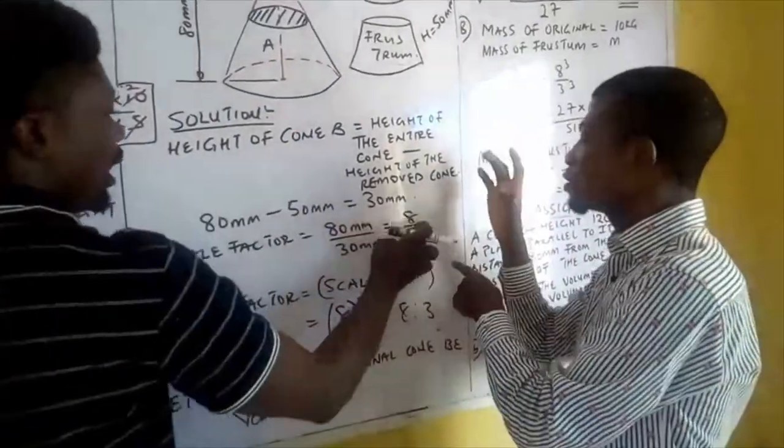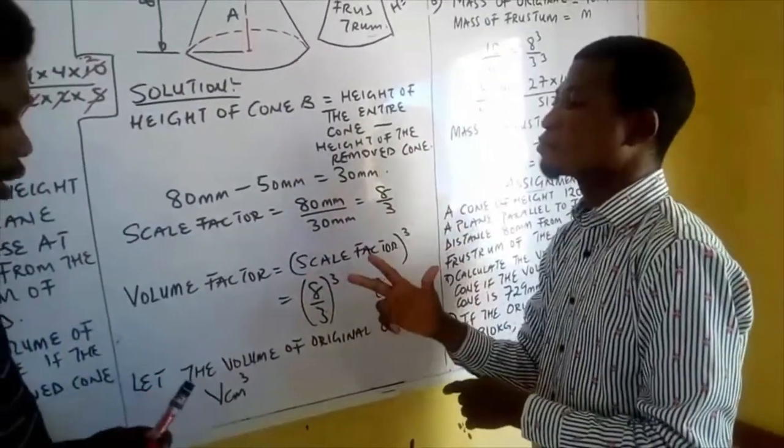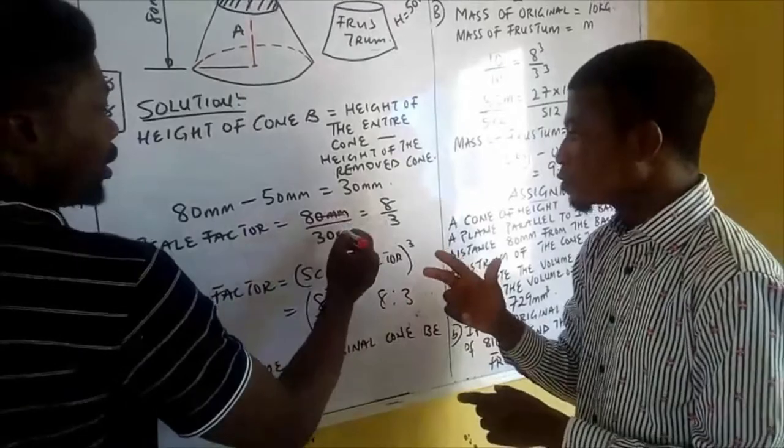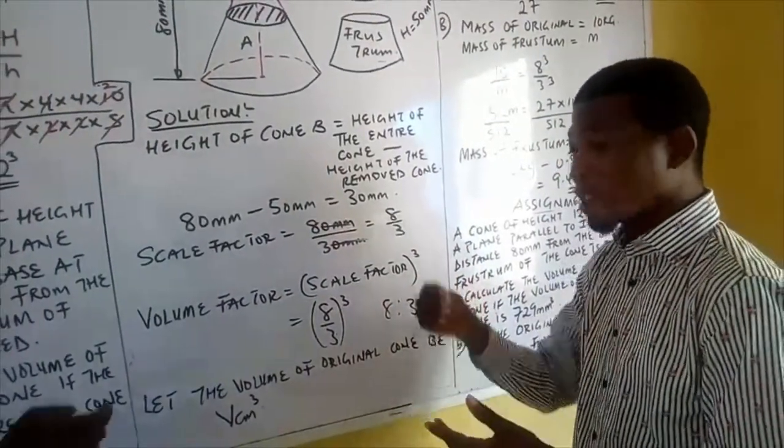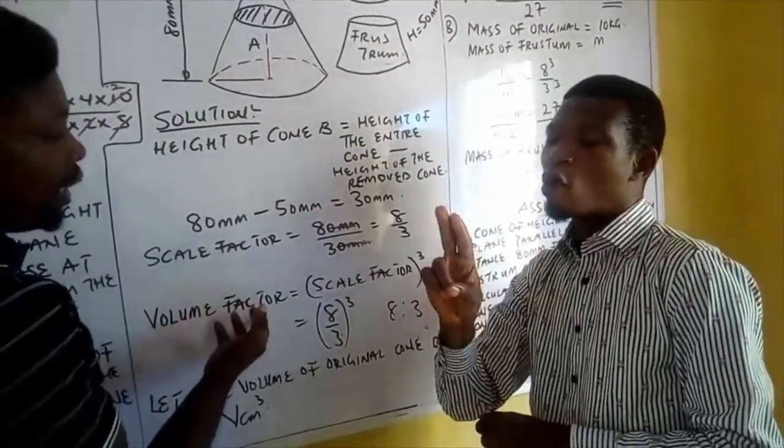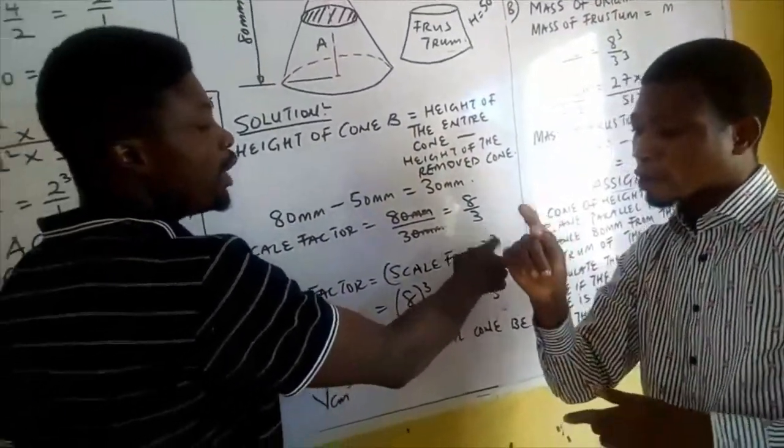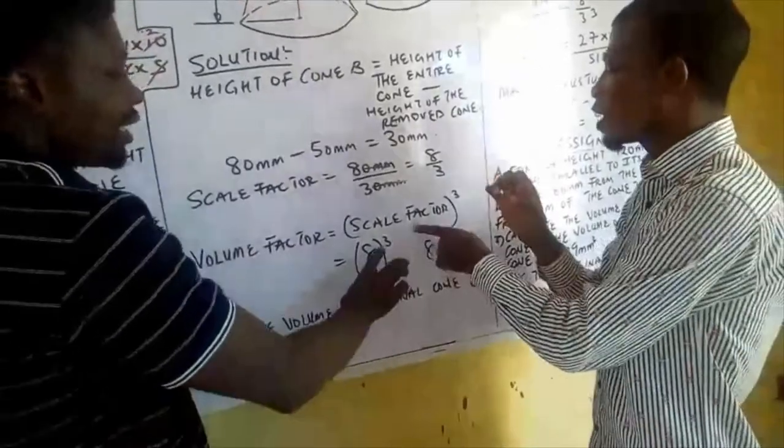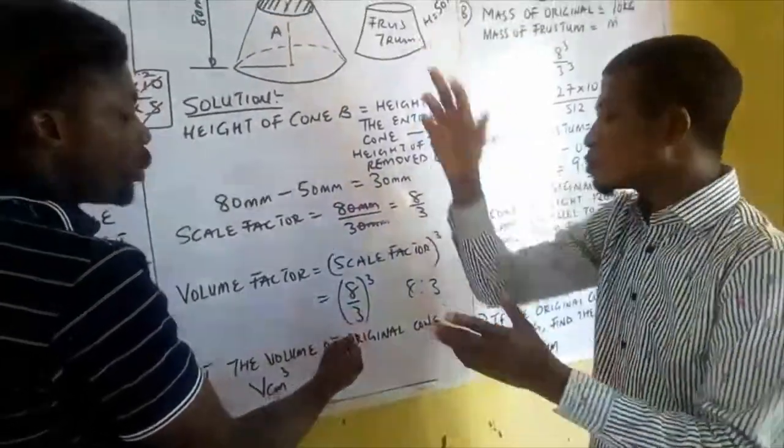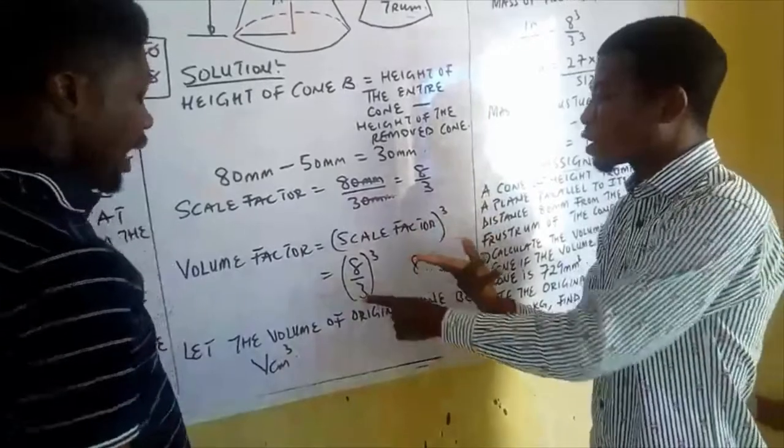This will give you 80 over 30. If you reduce to lowest terms, you get 8 over 3. Remember that volume ratio or volume factor is the same thing as the scale factor raised to the power of 3. So if our scale factor is 8 over 3, we have (8/3)³.